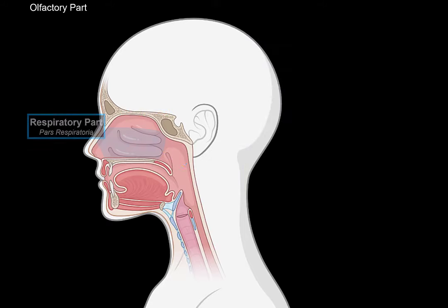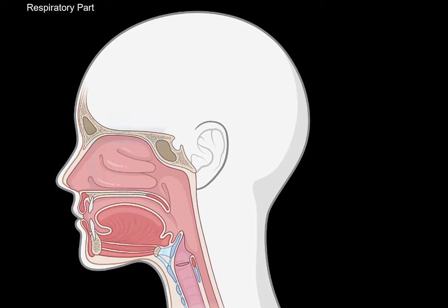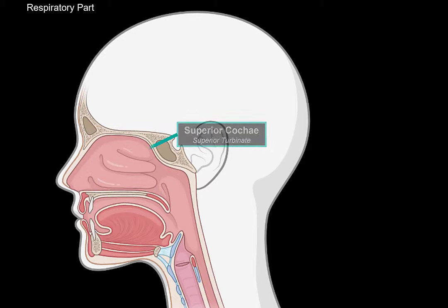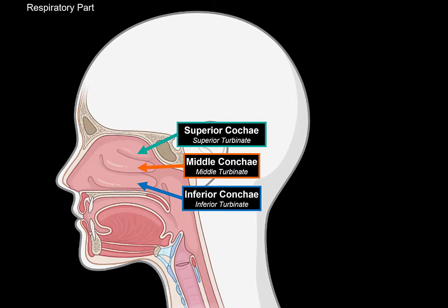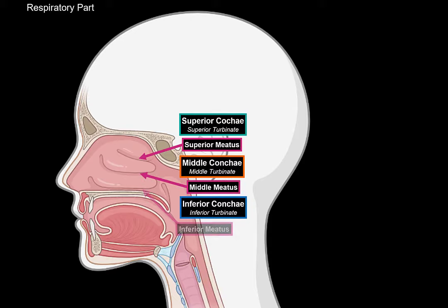The respiratory part differs a little bit. The first thing you'll notice when you look at the respiratory part are these bumps on the nasal mucosa, and these are called the conchae or turbinates. We have the superior conchae, middle conchae, and inferior conchae. In between them, we have something called meatus, which are spaces that have openings for the sinuses. There's the superior meatus between the superior and the middle conchae, the middle meatus, and the inferior meatus underneath the inferior conchae. Above the superior conchae, right at the junction between the sphenoid bone and the ethmoidal bone, there's a recess called the sphenoethmoidal recess.